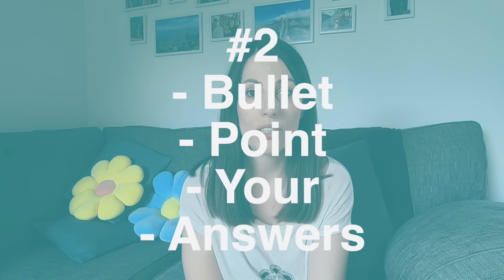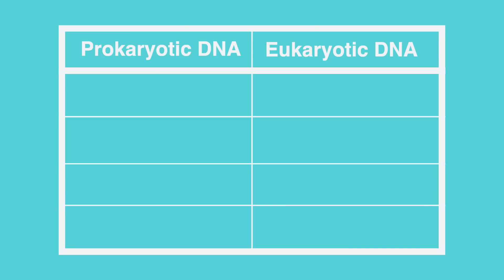Tip number two: you are allowed to bullet point your answers, or even present them as a table, for AQA in every question except the essay on Paper 3. For all questions worth more than one mark, bullet point what you think each mark is. That doesn't mean just writing a single word — it's still a sentence — but it avoids waffling or losing track of your marking points. Bullet points make you quicker, more concise, and easier for the examiner to mark. For tables, if a question says 'compare,' use your two subjects as column headers — for example, prokaryotic DNA and eukaryotic DNA — with each row being a comparative point.